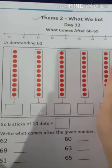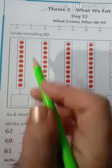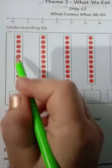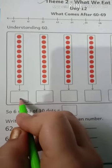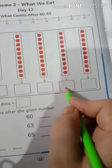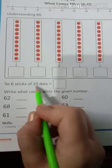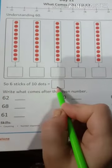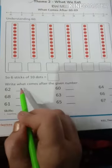These are for understanding 60. That is 1 stick of 10 dots, that is 1 tens, 2 tens, 3 tens, 4 tens, 5 tens, and 6 tens. So 6 sticks of 10 dots is equal to 60.